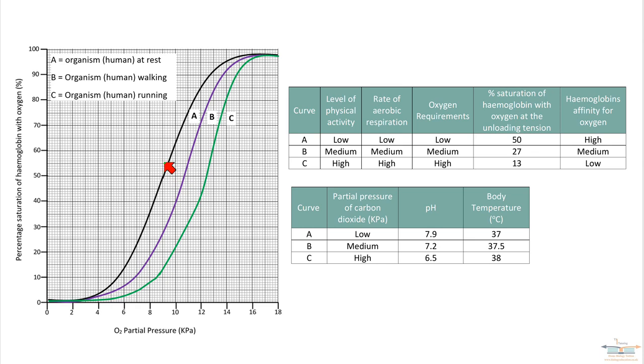The curves are moving or being shifted to the right. Now, whenever you get an oxygen dissociation curve plotted more to the right, that tells you the affinity hemoglobin has for oxygen is being lowered.